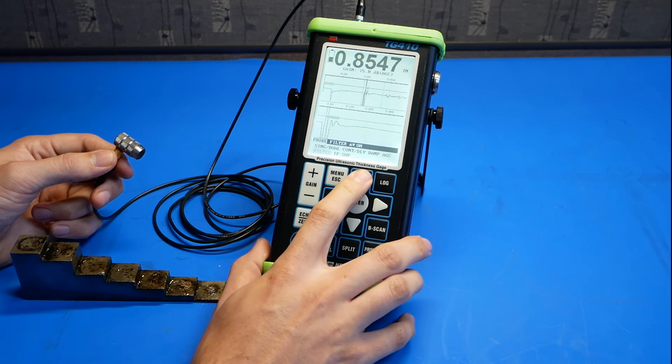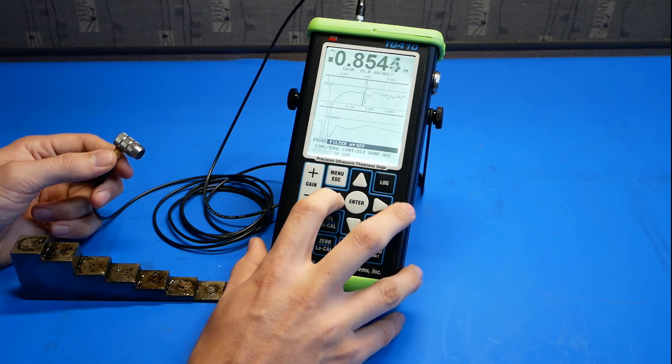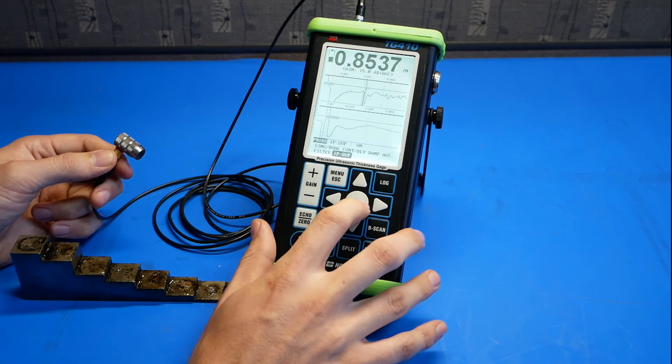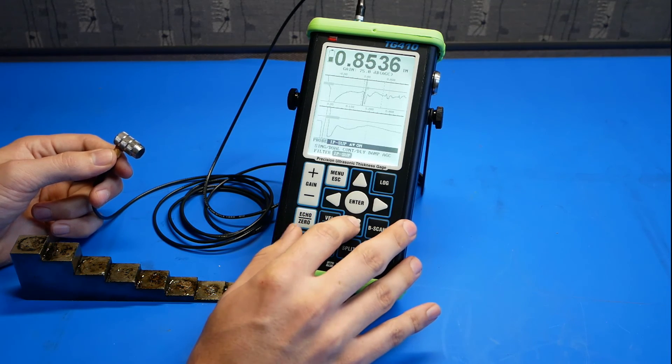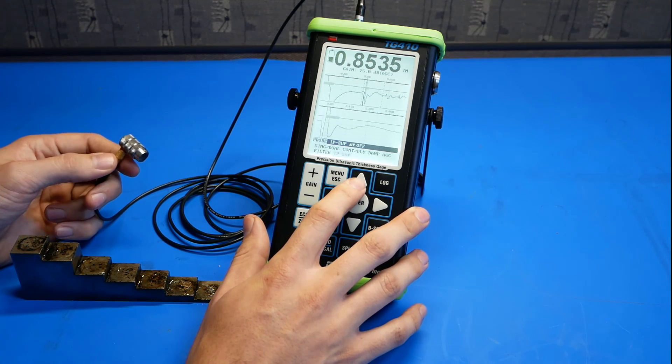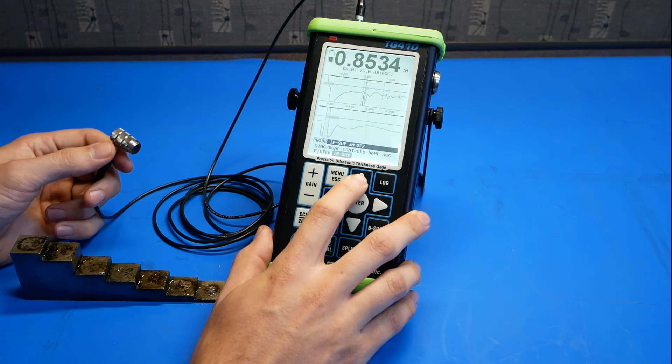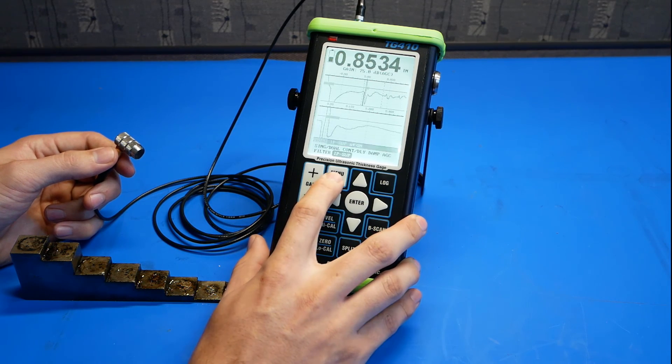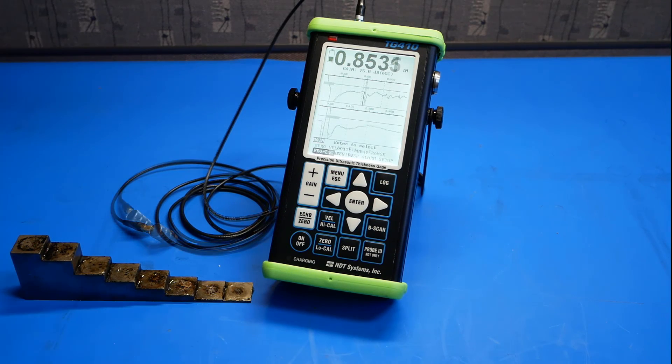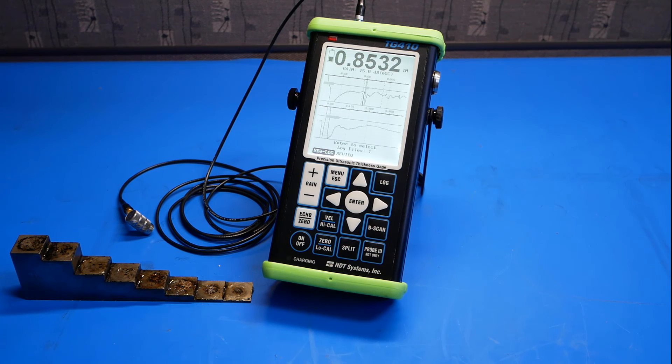Filtering, we can turn on and off. These help with bandwidth. And initial pulse suppression, which keeps the initial pulse from being too noisy. This probe is pretty clean in signal, so the suppression doesn't help much. Now, that's all for setting up the probe. That's all for this video. If you have any questions about the gauge or potential applications, please contact us at our website, ndtsystems.com. Thanks.